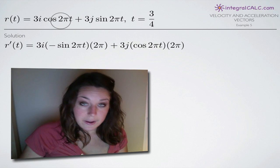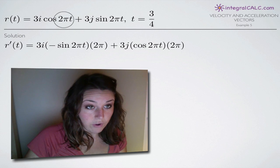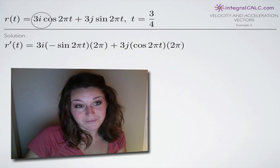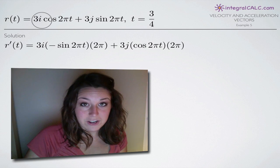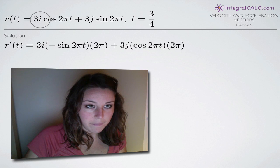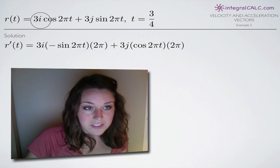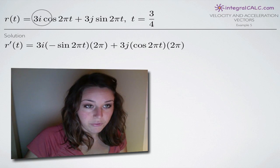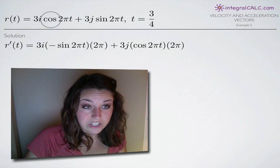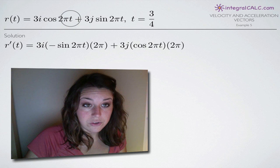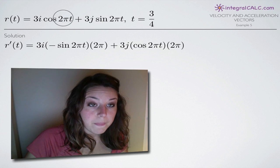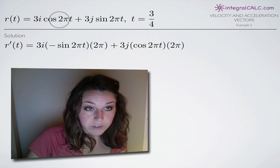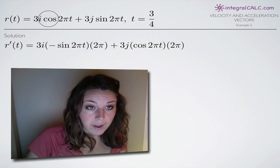When you're taking derivatives here with i and j involved, you can more or less ignore i and j completely — they're not like variables, you don't have to treat them specially. So this 3i here, you can treat as a coefficient on this term. All we really have to pay attention to is t, which is our variable. We're going to have to use chain rule a lot because we have complicated functions inside cosine and sine.